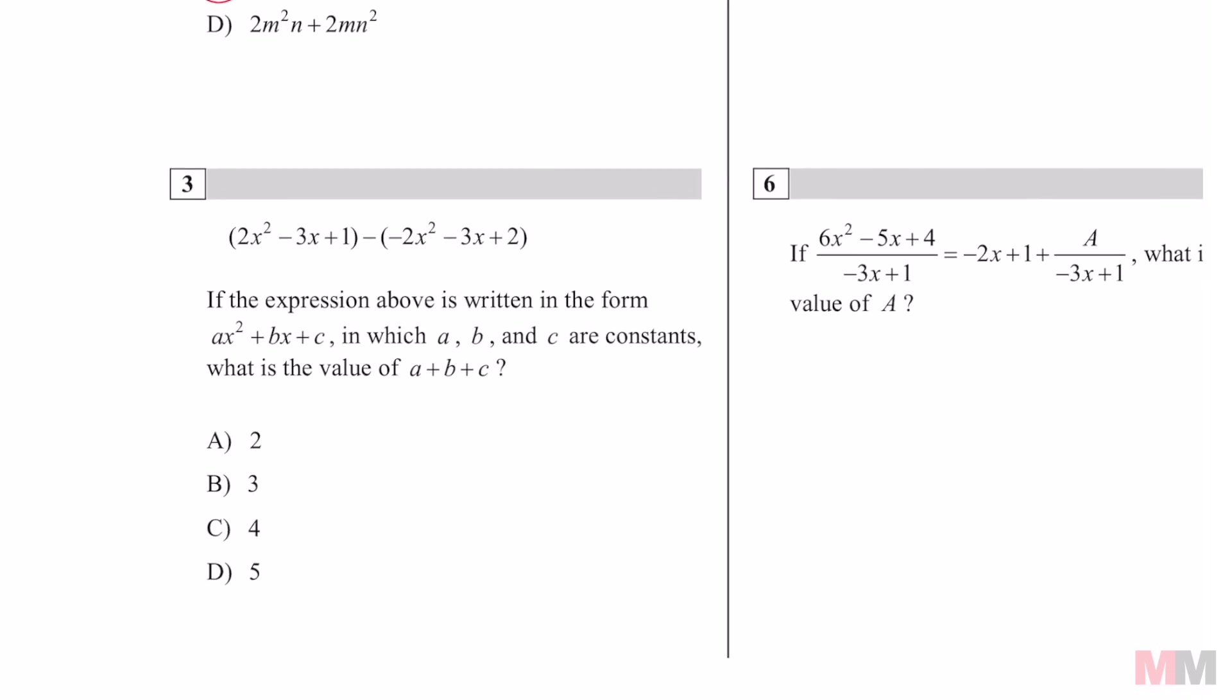For number three that one you do have to distribute everything so only take the shortcuts when you can. It says if the expression above is written in this format a b c are constants or they're your coefficients the numbers in the front then what is a plus b plus c? First thing I'm going to have to do is distribute this negative to all the terms. I'm going to do that in red negative 1 times negative 2 is positive 2 x squared and you get 3x after you multiply the second one and negative 1 times 2 is negative 2.